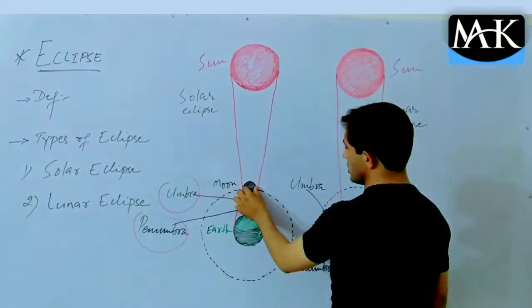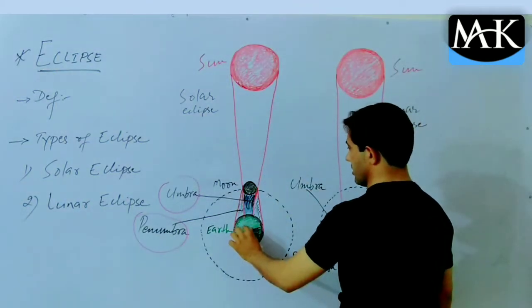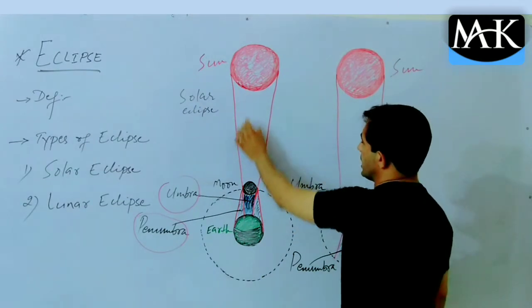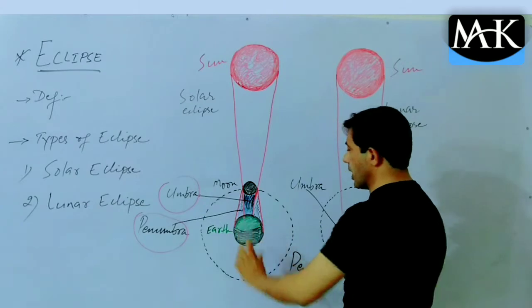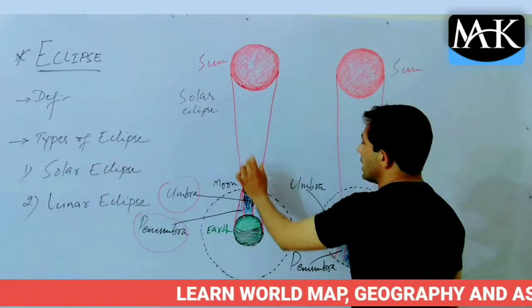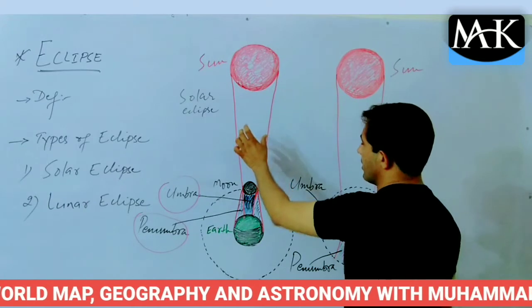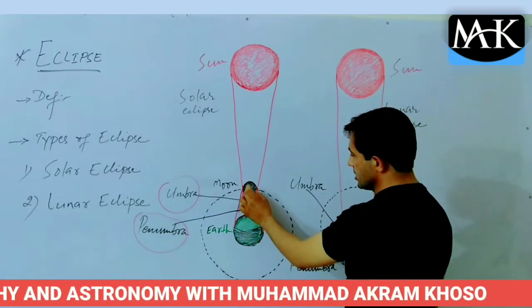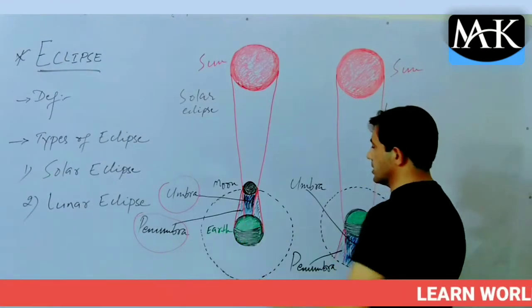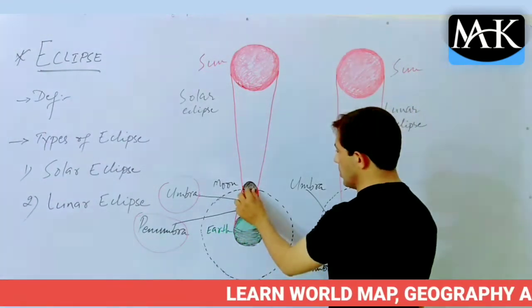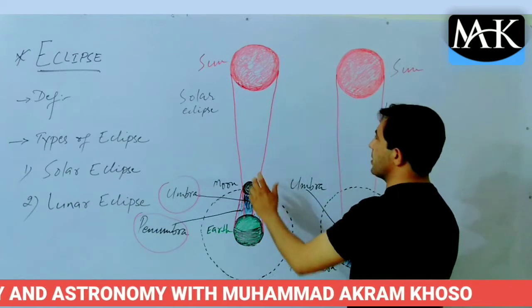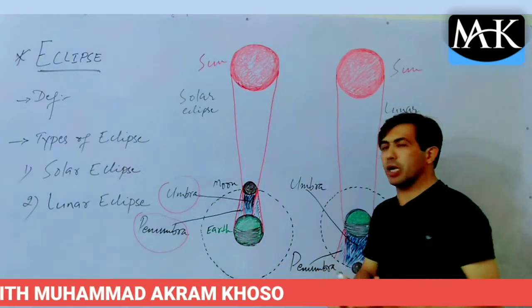Solar eclipse happens when the moon comes in between the sun and the earth. The light rays of the sun are blocked by the moon, so people on the earth cannot see the sun clearly — the sun looks quite dark or disappears because of the moon blocking it. When the moon comes in between the sun and the earth, this causes the disappearance of the sun, and this phenomenon is known as the solar eclipse.